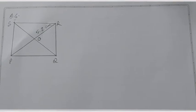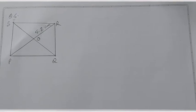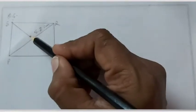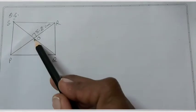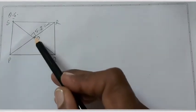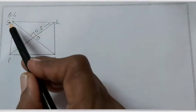As we know diagonals of square are equal and bisect each other at 90 degree. It means PO equal to OQ equal to OR equal to OS.